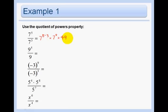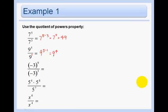In our next example we need our invisible 1 — remember. So we have 9 to the 5 minus 1, which equals 9 to the 4th power. It's very important to not forget about our invisible 1, because 9 is the same thing as 9 to the 1st power.